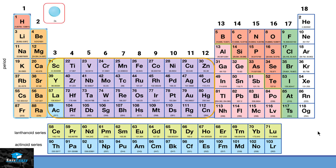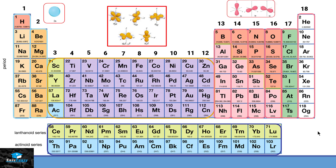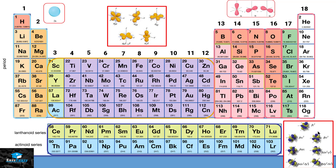From group 3 to group 12, these elements are present in D block. From group 13 to 18, these elements are present in the P subshell. And the lanthanide series and actinide series are present in F subshells. So this table is also telling us the type of subshells present in these elements.